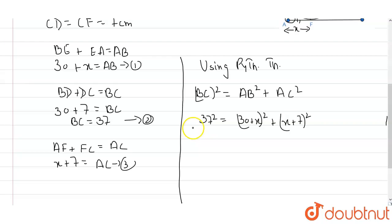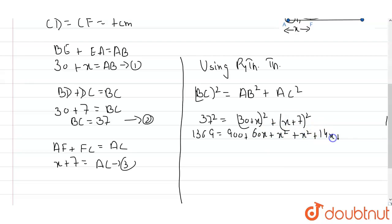Expanding: 1369 equals 900 plus 60x plus x squared, plus x squared plus 14x plus 49. After solving this equation, we arrive at 2x squared plus 74x minus 420 equals 0.